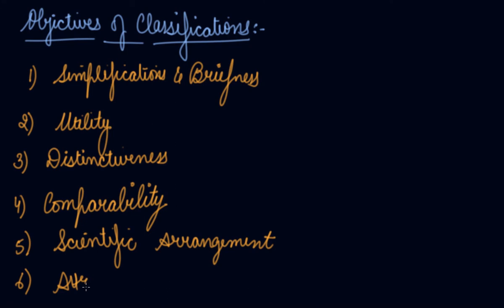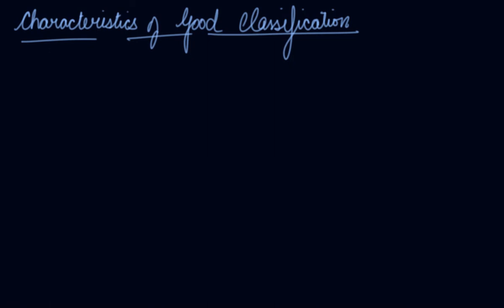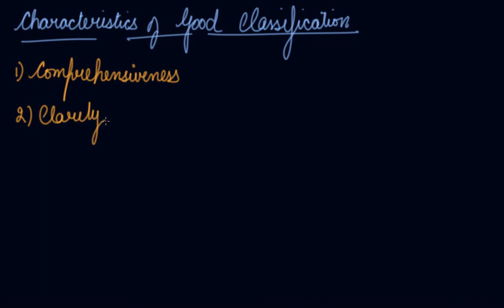Sixth, the data becomes more attractive and effective to get results out of it. Now, what should be the characteristics of good classification? Number one is comprehensiveness — each item of the data collected should be included in some group, it should not be left out, it should have some class. Second is clarity — the classification of data must be very clear, so the raw data when classified into classes should be absolutely clear and simple.